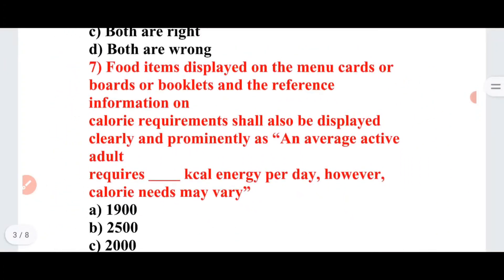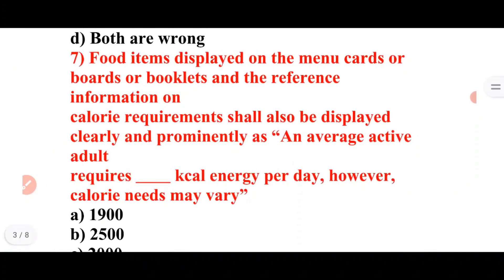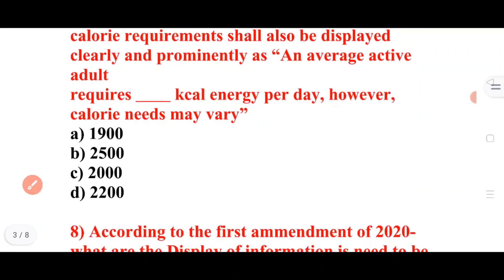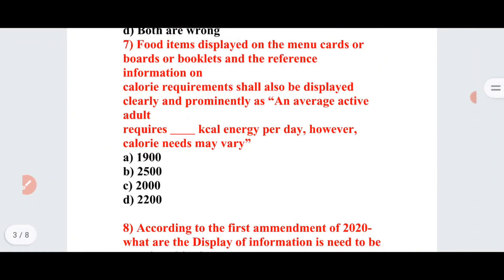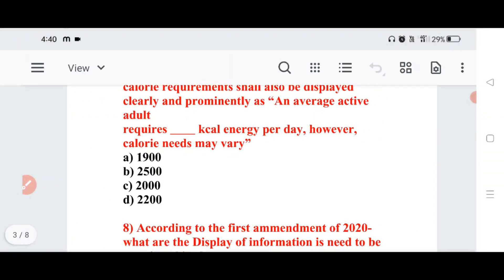Next question: Food items displayed on menu cards, boards, or booklets shall reference calorie information, as an average active adult requires how many kilocalories of energy per day? Options: 1900, 2500, 2000, or 2200 kilocalories. Answer: 2000 kcal is the correct answer.